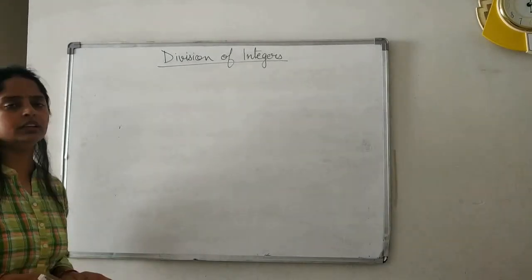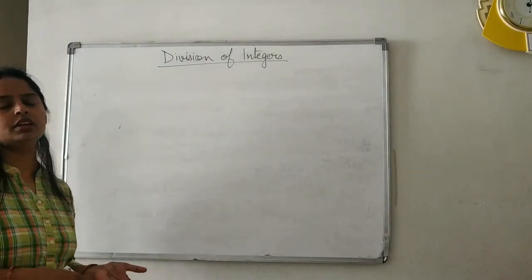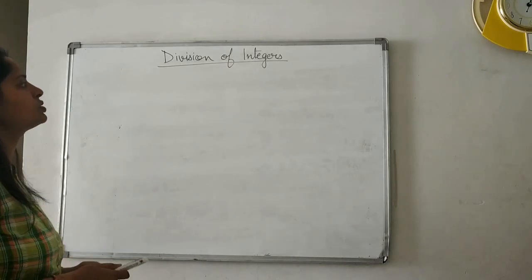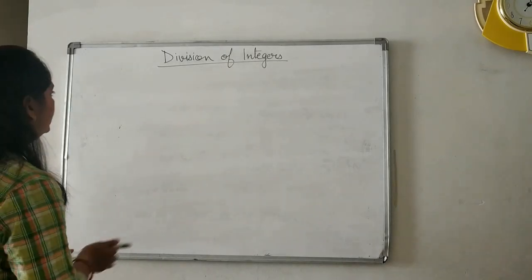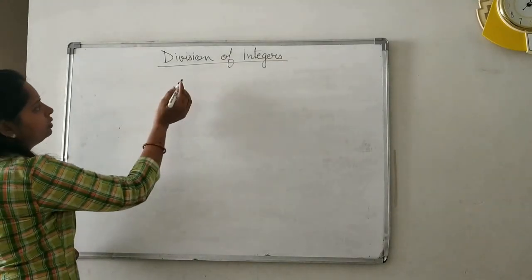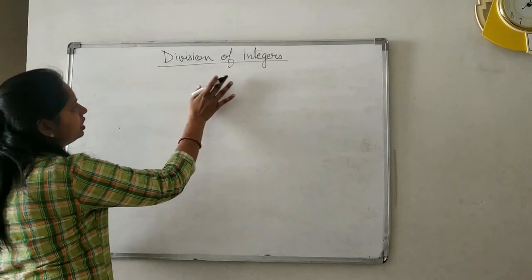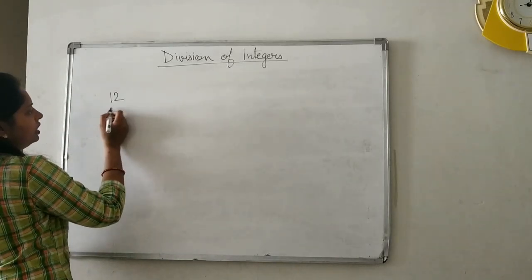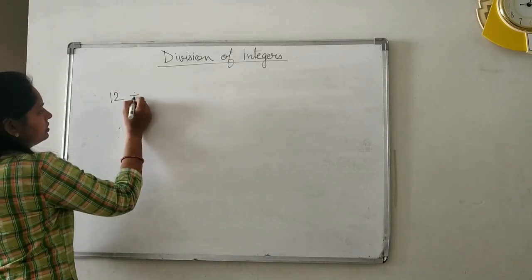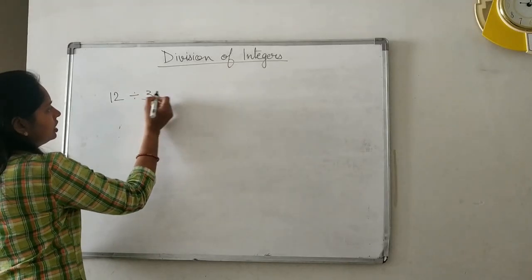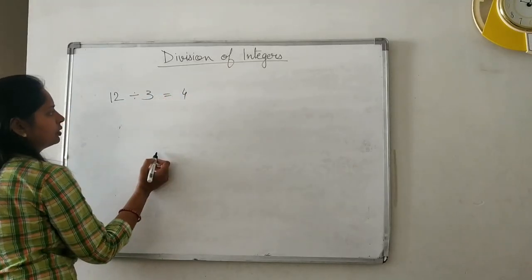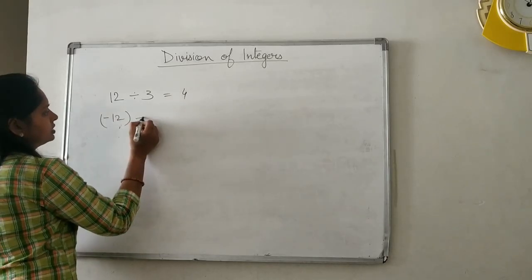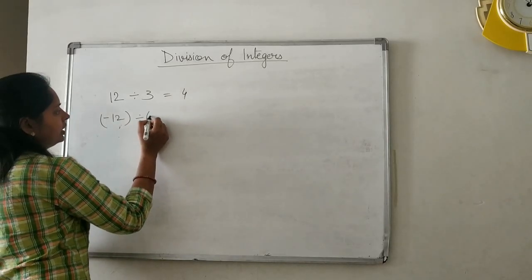Friends, as we have already done yesterday with exercise 1.3, now we will start with the rules of division of integers. Let's see what rules we have to follow while doing the division of integers. When a positive integer 12 is divided by positive integer 3, the answer is 4. If negative integer 12 is divided by negative integer 3, then also the answer is 4.